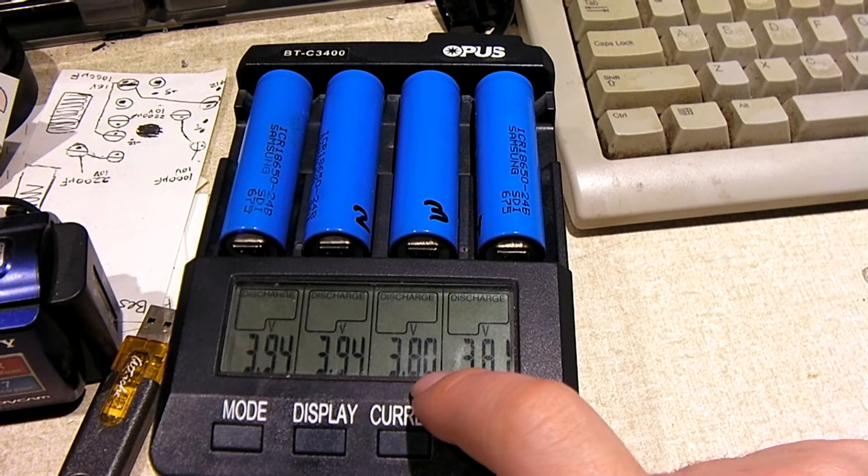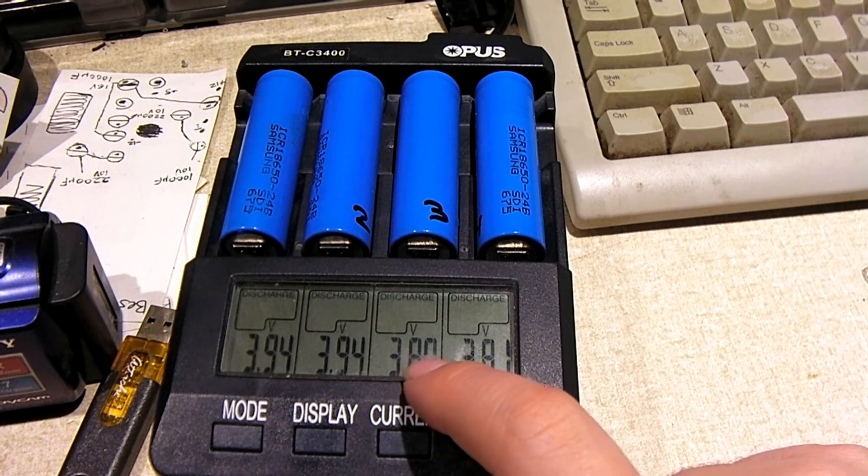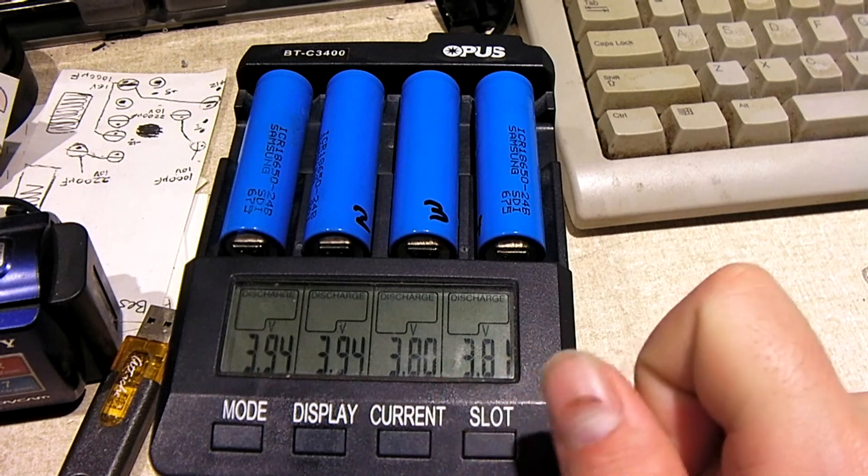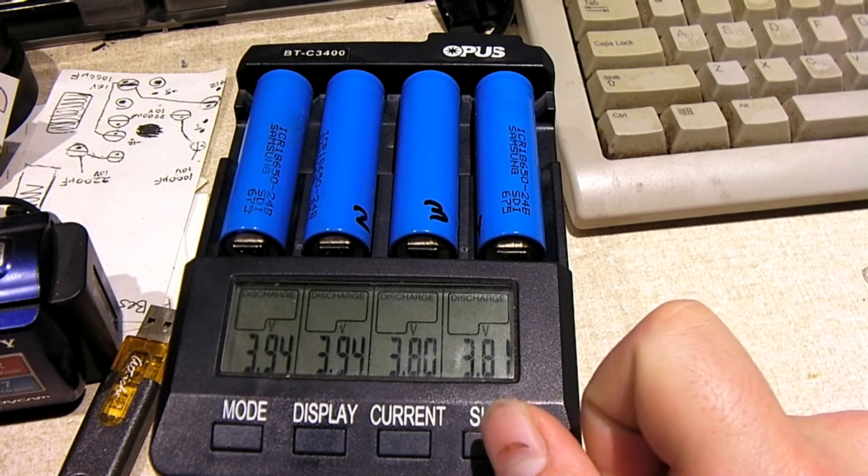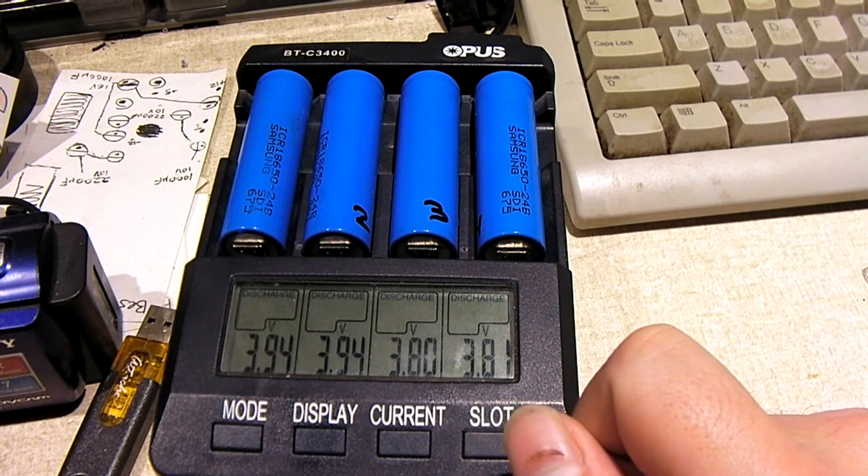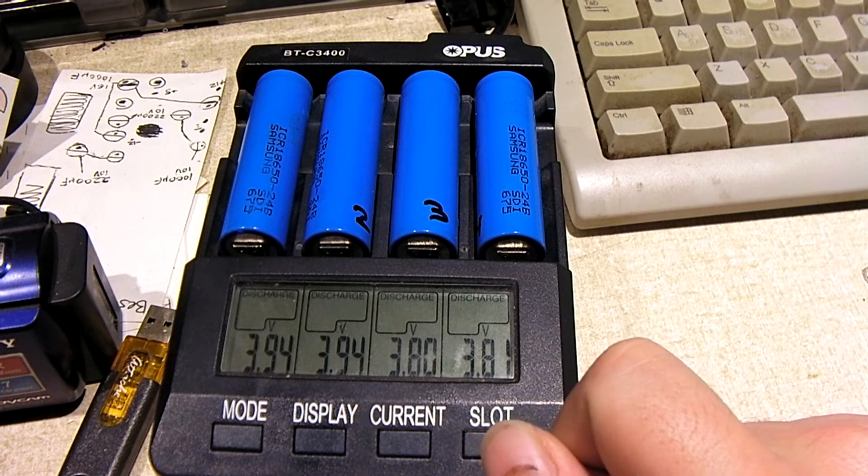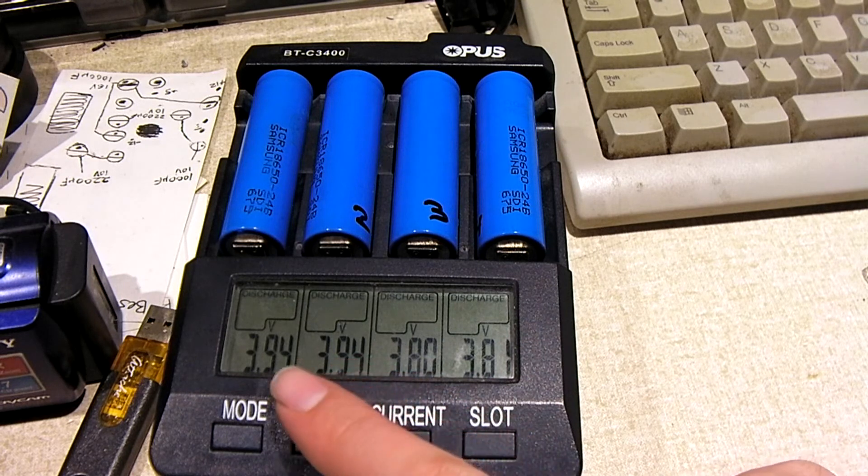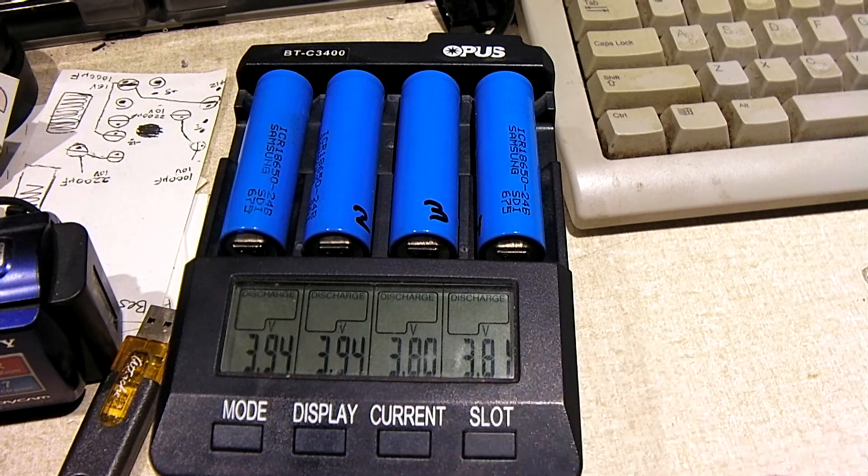And usually my better cells, when they were subjected to this charger's discharge test, usually they'll rebound to about I don't know, 3.2 to 3.4 volts, something like that. Not 3.94 and 3.8 and 3.81.